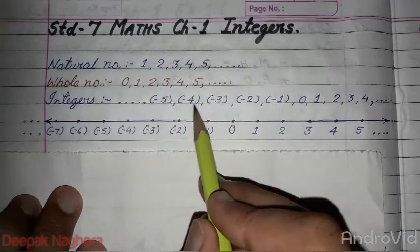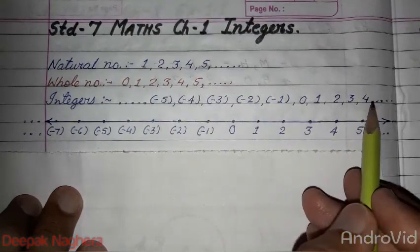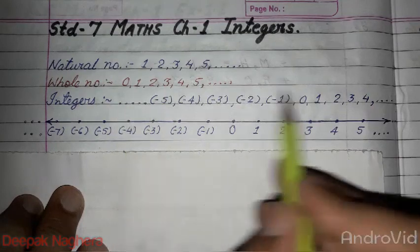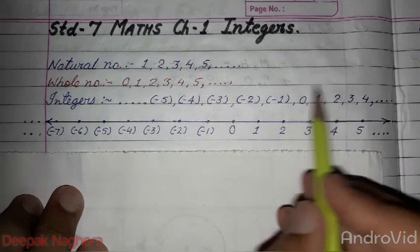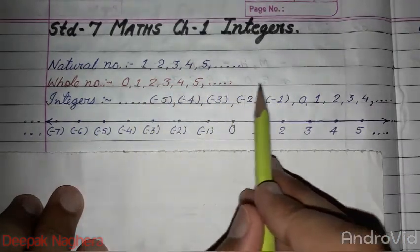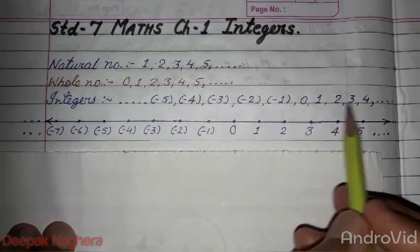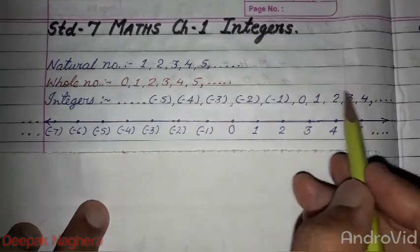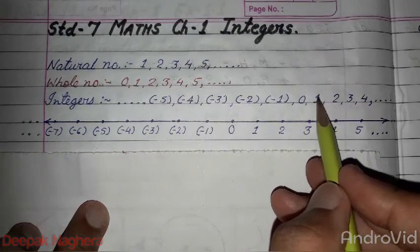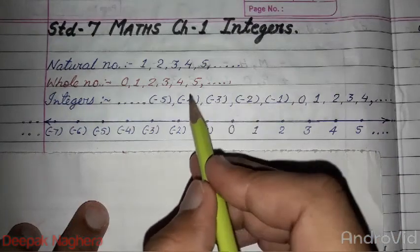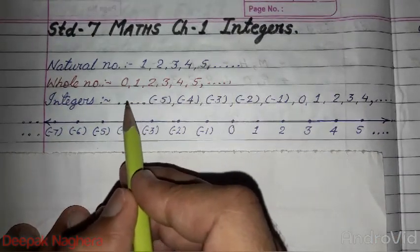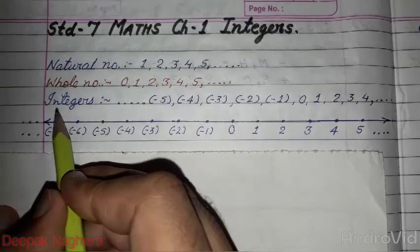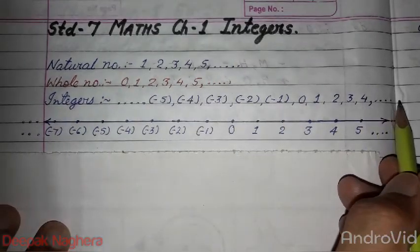So all these numbers we call integers. In integers, whole numbers come and all negative numbers come. On the left side are negative numbers, and on the right side of zero are positive numbers. In integers, we cannot find the smallest or greatest integer. The greatest we cannot find, as explained earlier, because 0, 1, 2, 3, 4, 5, 6, 7 go on unlimited. Now for smallest, suppose we start from here: 4 is smaller than 5, 3 is smaller than 4, 2 is smaller than 3, 1 is smaller than 2. Going smaller and smaller, even minus 6 is smaller still. If we think minus 6 is smallest, then minus 7 is smaller.